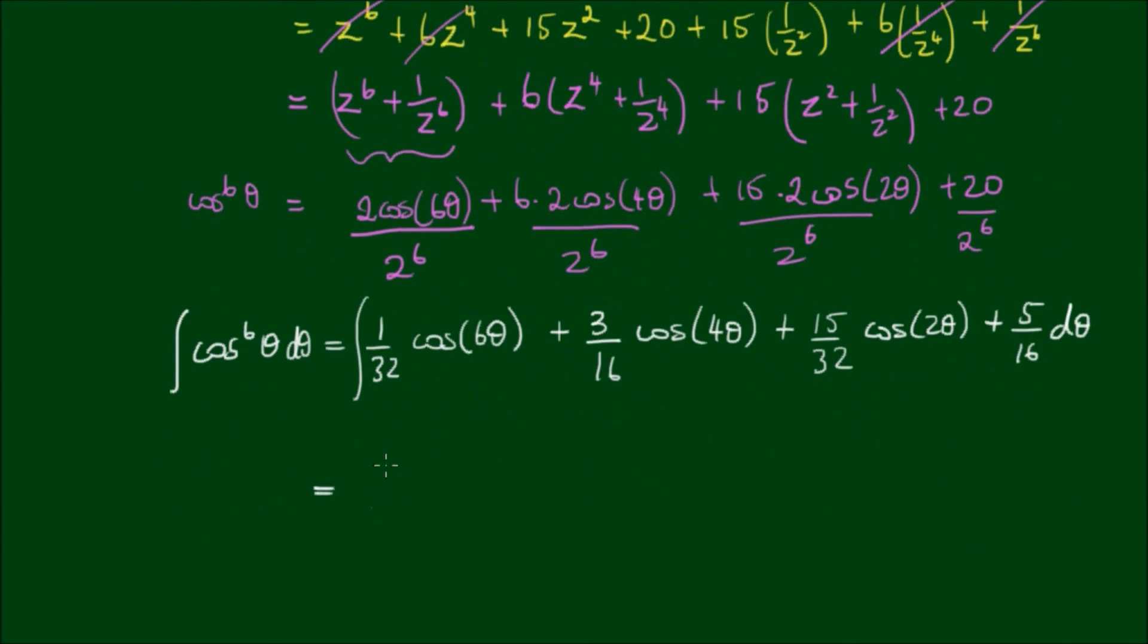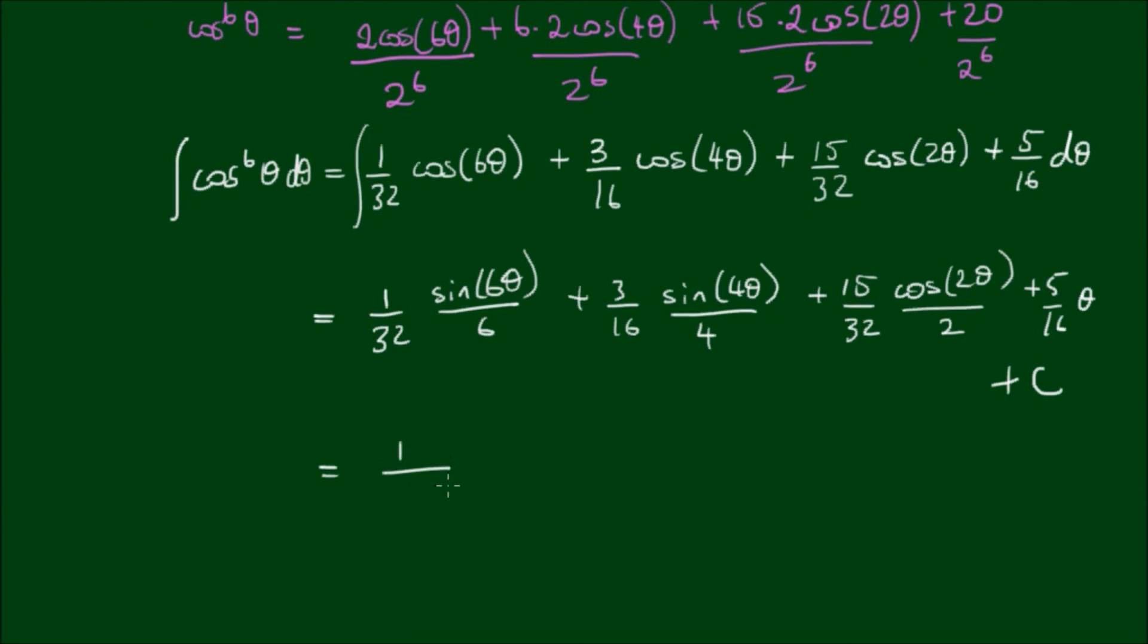Yes we can. So the right-hand side integrates to 1 on 32 by sin 6theta over 6, plus 3 on 16 by sin 4theta over 4, plus 15 on 32 of sin 2theta divided by 2, plus 5 on 16 by theta, and plus the integration constant c. So if we simplify further we get 1 on 192 sin 6theta plus 3 on 64 sin 4theta plus 15 on 64 sin 2theta plus 5 on 16 theta plus the integration constant c.